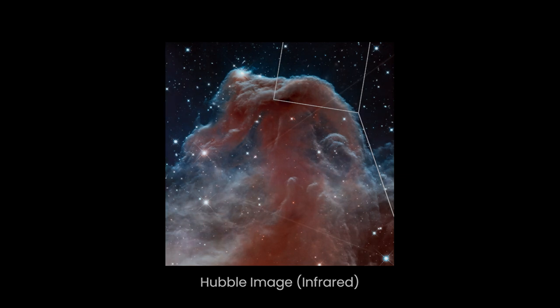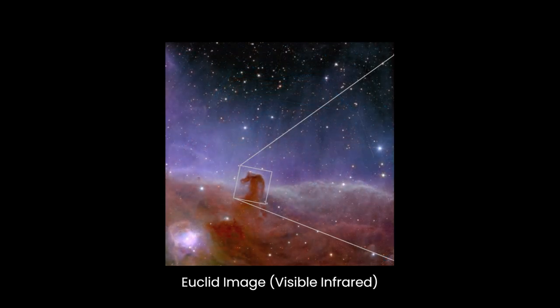The Webb's near-infrared camera captured detailed close-ups, presenting the nebula as a curved wall of smoky gas and dust, adorned with distant stars and galaxies.